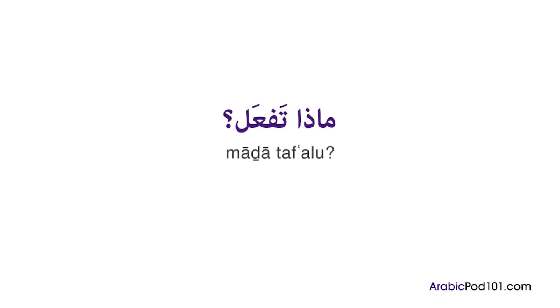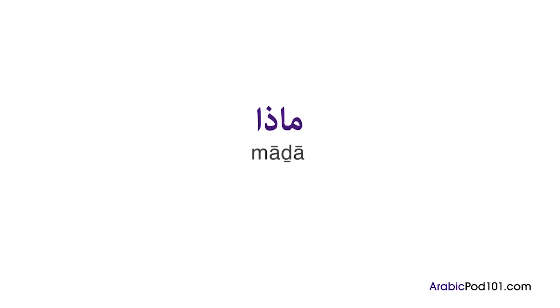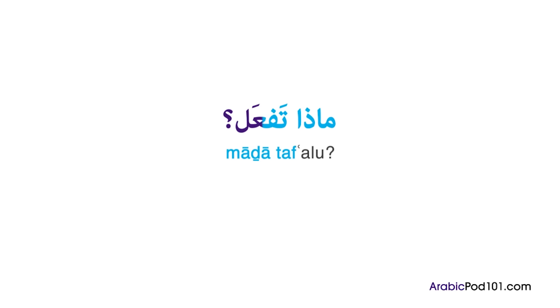Imagine you want to ask your friend what he is doing. You will ask: ماذا تفعل؟ Let's break down this question. ماذا is the ready-made formula to say 'what' in Arabic. تفعل is the second person form of the verb فعل, which we already studied. So all together: ماذا تفعل؟ — What are you doing?